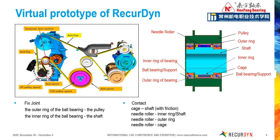Let's see the OAP virtual prototype based on RecurDyn, as shown in the picture. The purpose of OAP dynamic simulation based on RecurDyn is to study the movement of needles, the contact force between needles and the inner ring or outer ring, and the wedge time at different rotation speeds. The OAP simulation model has two ball bearings on the left and right sides. The outer ring of the bearing is fixed with the pulley, and the inner ring is fixed with the shaft. The contacts between cage and shaft, between needle and inner ring, between needle and outer ring, and between needle and cage are all defined in the model.